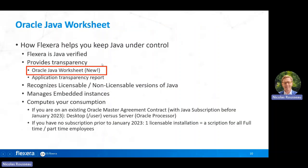We already have a full set of features covering the management of Java, which is a complex topic. We recognize licensable and non-licensable versions, allow management of embedded instances via the exemption by file path feature, can compute consumption, and using the intelligent license restriction you can split between server and desktop licenses. We also had a report called Application Transparency showing all raw evidences and their links to recognized applications. The Oracle Java Worksheet — released in April for cloud customers and now in 2023 R1 — provides full details, computer by computer and signature by signature, on installation path and whether it is an embedded instance.